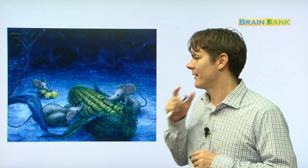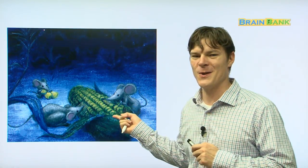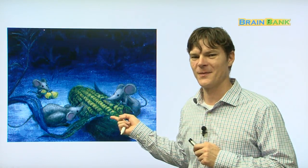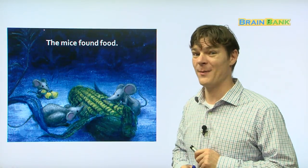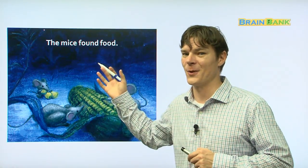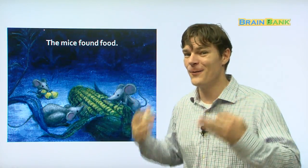Now, they finally found some food. Finally. They finally found some food. What kind of food is this? Do you know in English? Corn. Sweet, delicious corn. I like some sweet corn. It's really good. The mice found food. Everybody read with me. The mice found food. Very good. You guys are awesome.